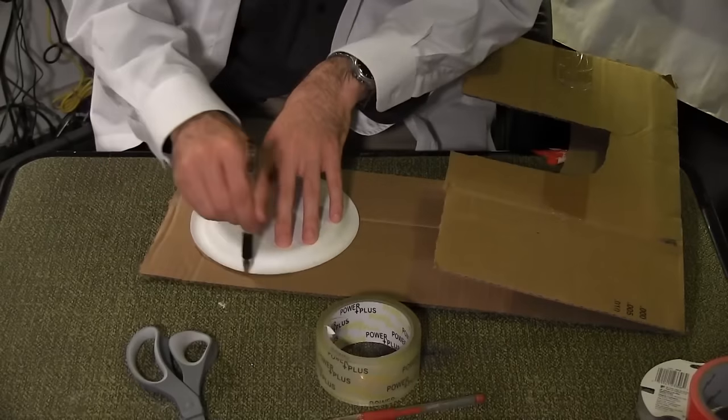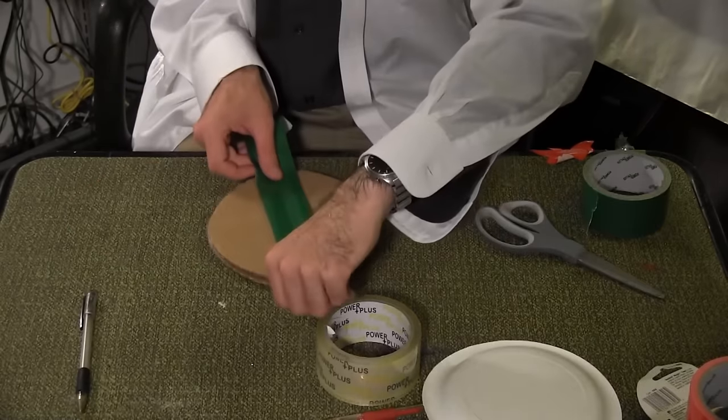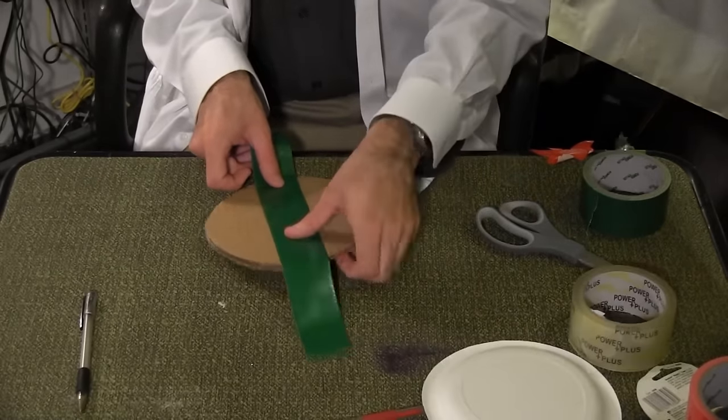Take a paper plate and use it to trace two circles on cardboard. Cut the circles out and tape them together with the dark green duct tape. Cover the entire piece.